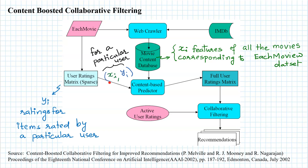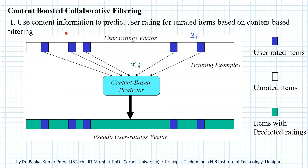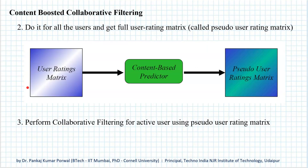Note that this dataset consists of only movies that have been rated by a particular user — only a few movies have been rated and the rest have not. We take these ratings, which are our labels Y_i, and combine them with the feature vectors obtained from the movie content database. We then train a content-based predictor for this user, which gives us a full user rating vector called the pseudo user rating vector.